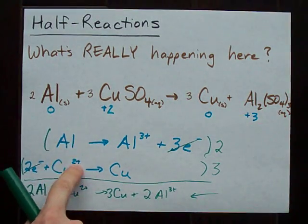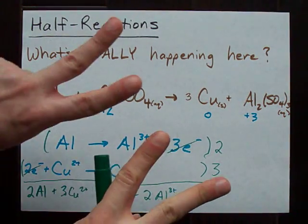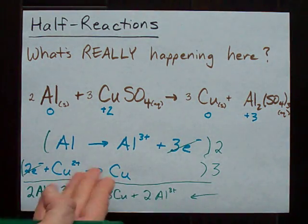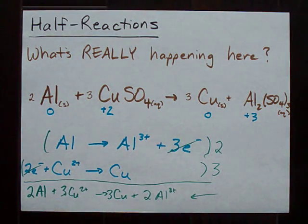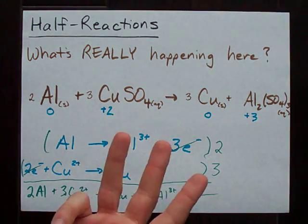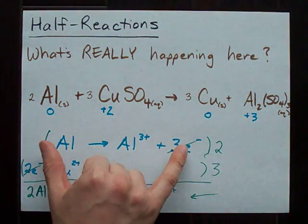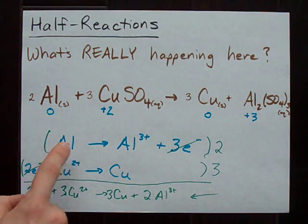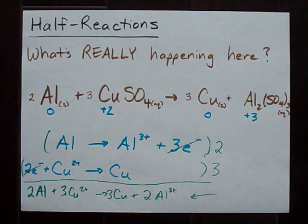Each of these reactions that I've written in blue are called half reactions because they only tell half the story of the overall redox reaction. Later, we're going to be figuring out how many volts a particular redox reaction gives off. But to figure that out, you're going to have to look up each of the half reactions in a table.